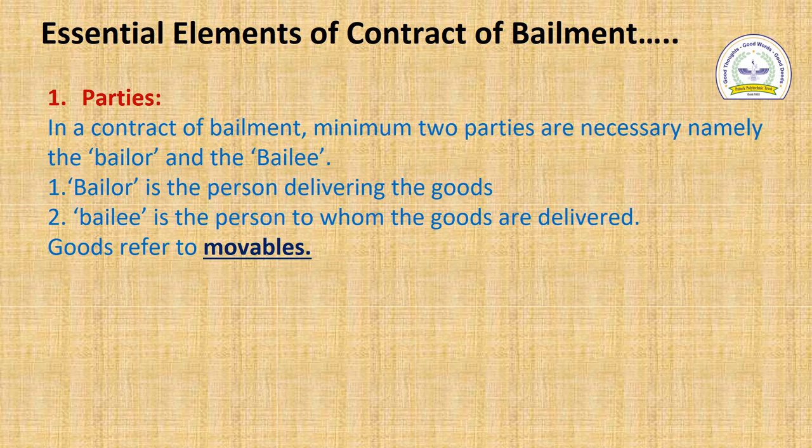Parties: in the contract of bailment, two parties are required — the bailer and the bailee. The bailer is the person who delivers the goods and the bailee is the person to whom the goods are delivered. One important thing to note: goods referred to under this contract of bailment means only movables.